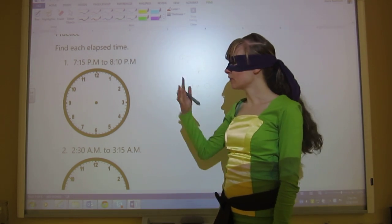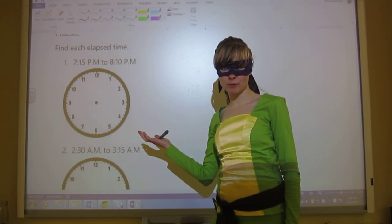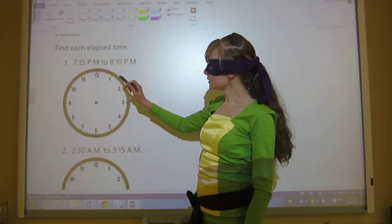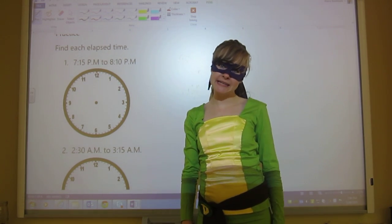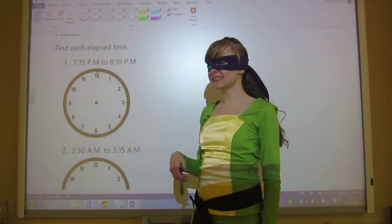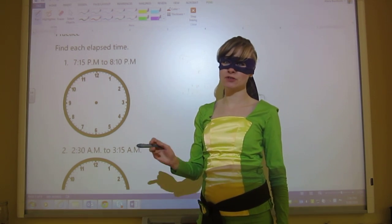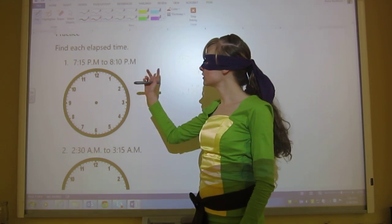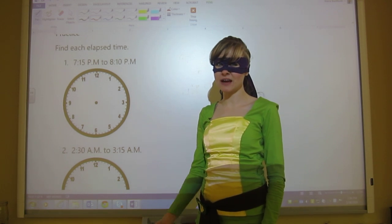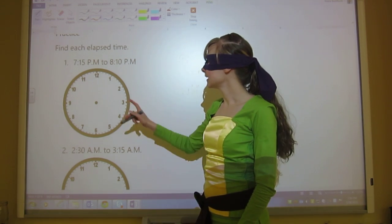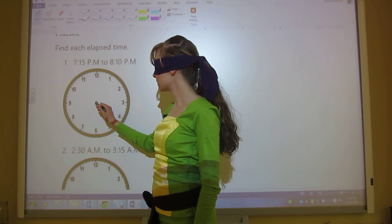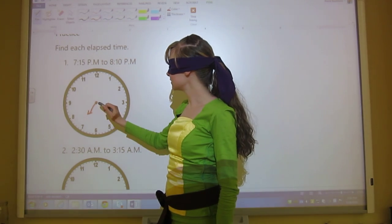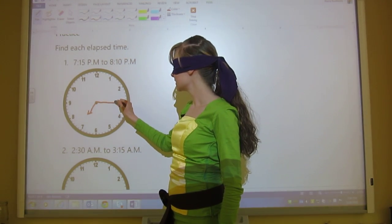So you've either finished all of these or you need help with question one. So let's do question one together. We start at 7:15 PM and we go to 8:10 PM. We don't really need to worry about the PMs and AMs right now because we're just going within 60 minutes, but it's good to start paying attention to that, to the fact that they're both PM. So I'm going to draw 7:15 on there.